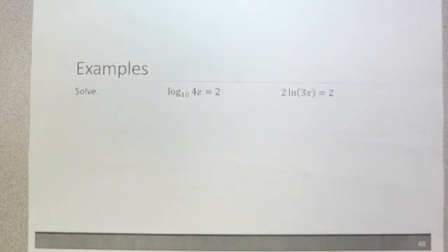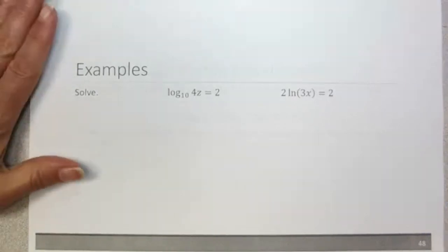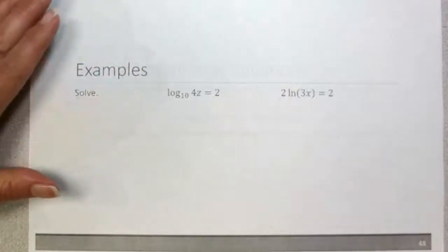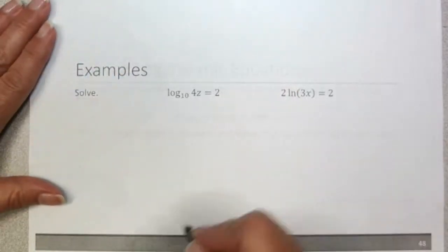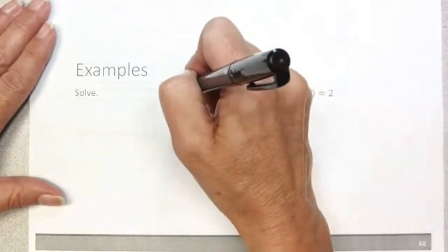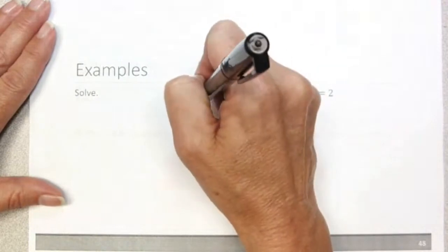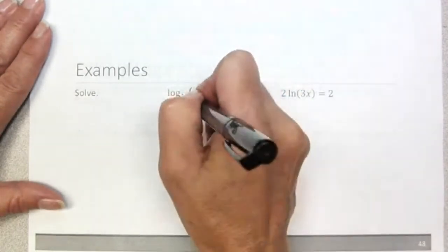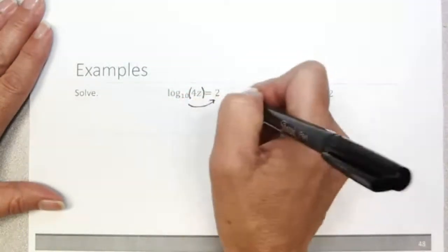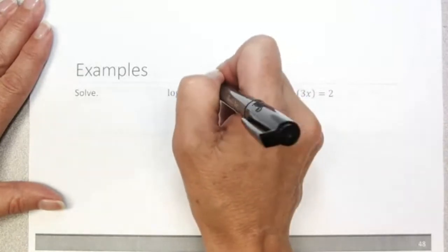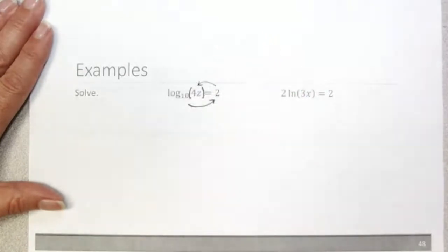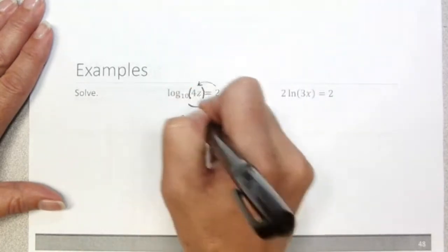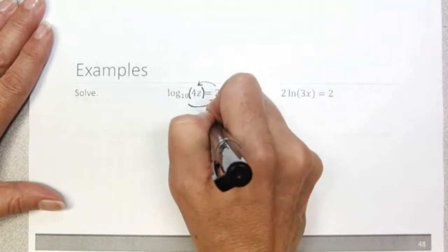Let's take a look at a couple of examples. We're going to solve for the value of the variable that makes the equation true. We have log base 10 of 4z equals 2. The easiest way to solve this would be to convert it to exponential form, starting with the base. So we write that as an exponential equation: 10 to the second power is equal to 4 times z.